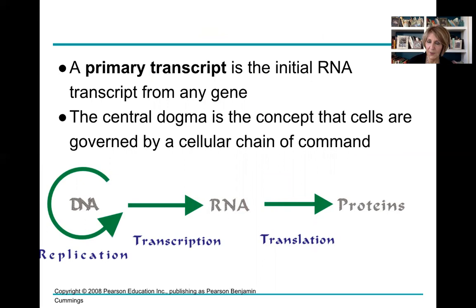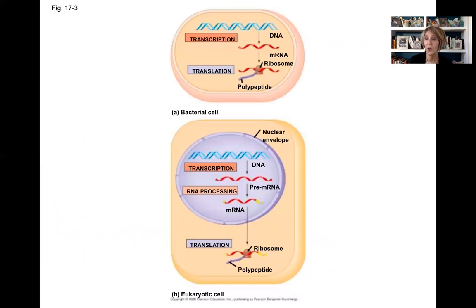The primary transcript is a piece of messenger RNA transcribed from any gene. In eukaryotes, that is edited. In prokaryotes, what you transcribe is what you translate — there is no further editing of that messenger RNA.